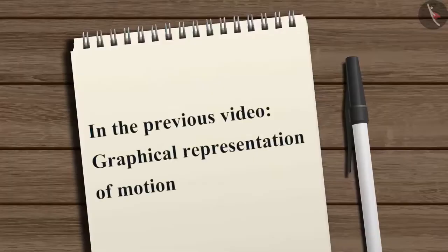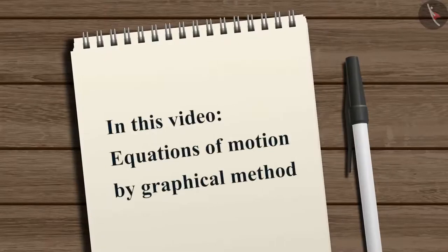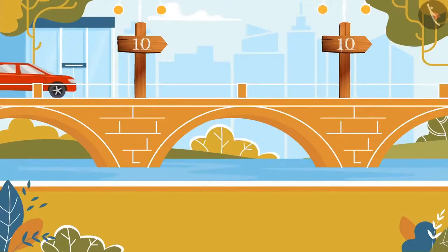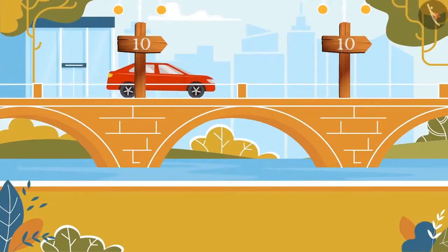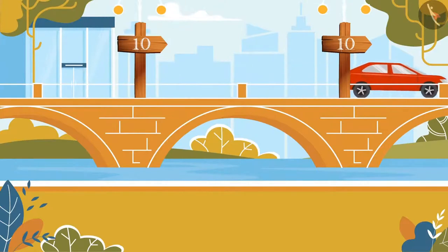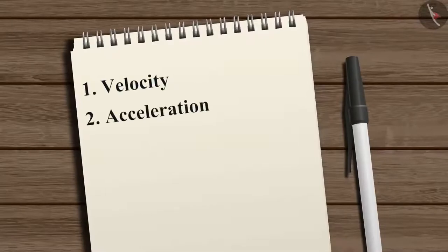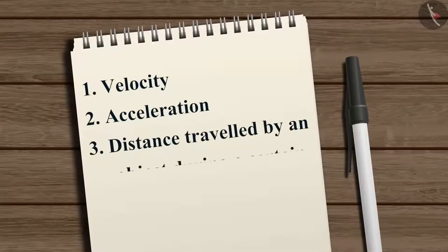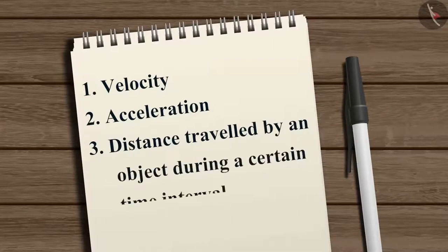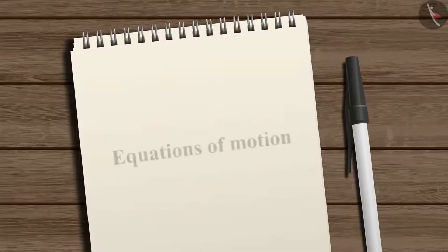In the previous video we learned about graphical representation of motion. We have studied the motion of an object along a straight line at uniform velocity. Now let us see how velocity, acceleration during motion, and distance traveled can be related using a set of equations called equations of motion.